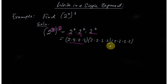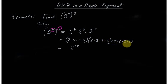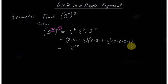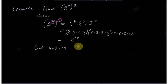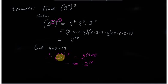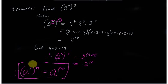Counting all the twos: one, two, three, four, five, six, seven, eight, nine, ten, eleven, twelve — so it is two to the twelve. Notice that four times three gives us twelve, so instead of going the long way, you can simply multiply the exponents. Two to the four, to the three, equals two to the four times three, which is two to the twelve.